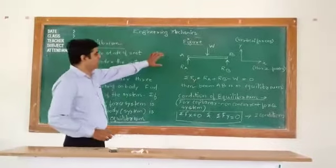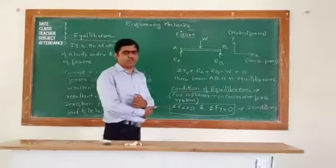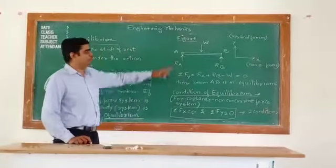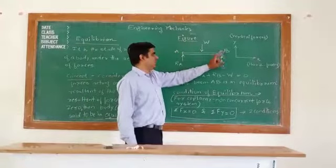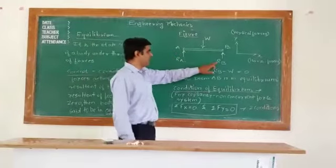We will see one example. The beam AB is placed with the xy coordinate system. On this beam AB, one external force W acts in a downward direction. At support A and support B, we have provided reactions which are called RA and RB.